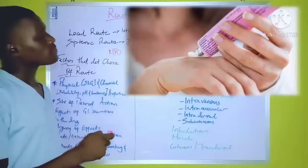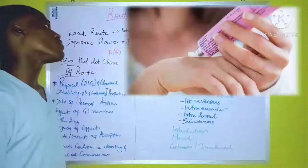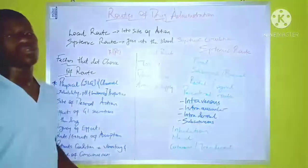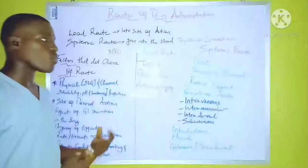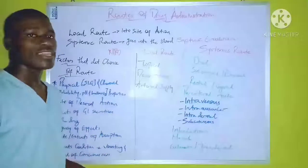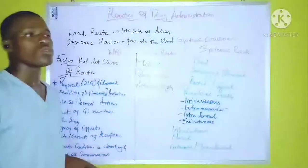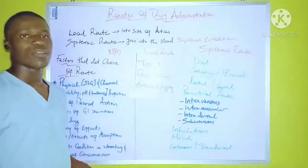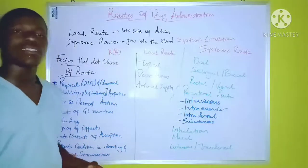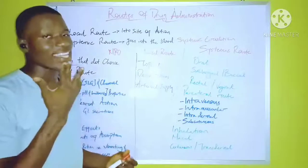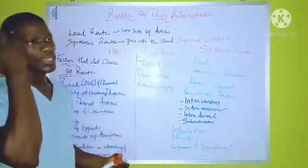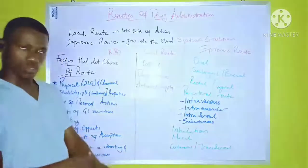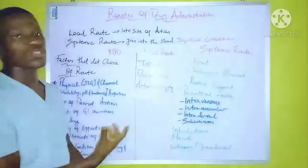Under the local route, we have the topical route. The topical route involves the administration of the drug either through the epidermal layer — that's on the skin — or through endothelial cells, such as the GI mucous lining. For example, in patients with peptic ulcer, drugs given through the oral route can have local effects only on the mucous lining of the GI tract without going into systemic circulation. Another example is the intra-articular route, where drugs administered directly into the joints only have effects on the joints. Topical drugs applied on the surface of the skin are not absorbed into the bloodstream and don't enter systemic circulation.